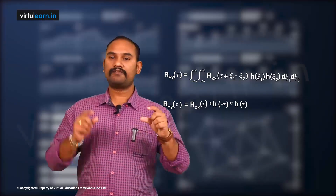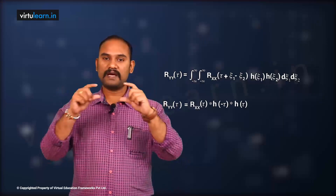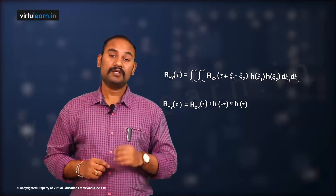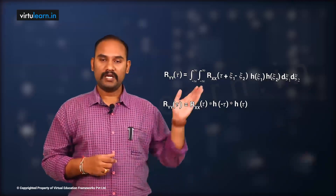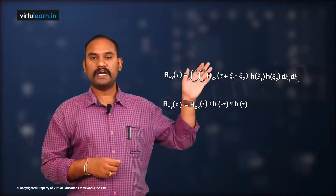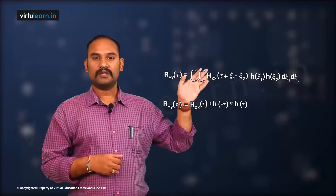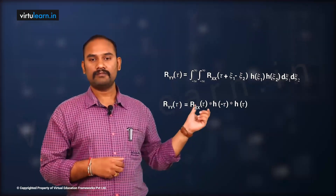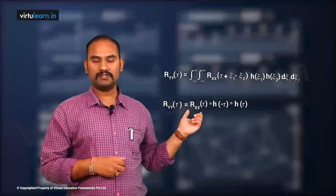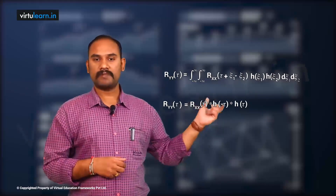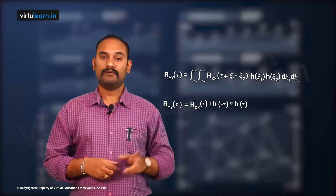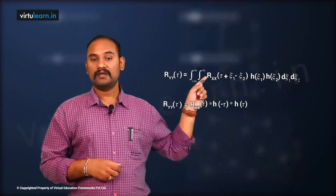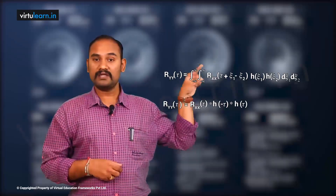If we have two signals x₁(t) and x₂(t), convolution is written as x₁(t) ★ x₂(t). So instead of writing all the integrals and impulse functions elaborately, we can write simply: the ACF of the response Ryy(τ) = Rxx(τ) ★ h(−τ) ★ h(τ). We get h(τ) two times — one is h(−τ) and the other is h(τ) — because in the earlier expression we had τ + ζ₁ − ζ₂.